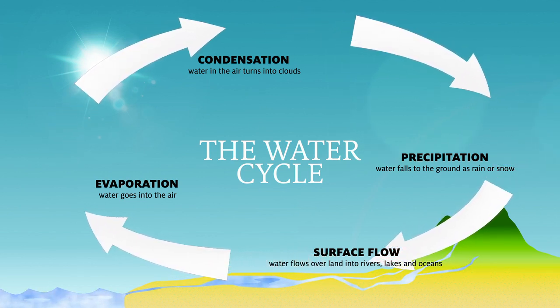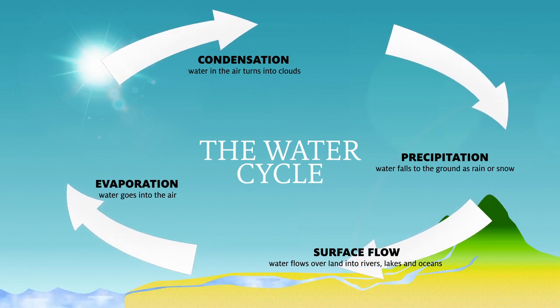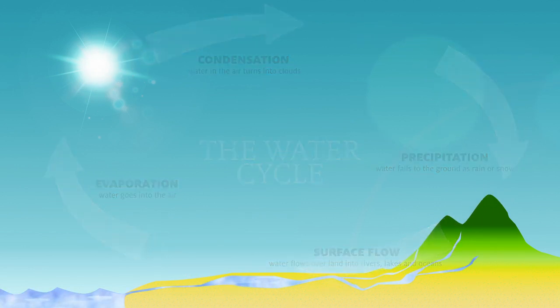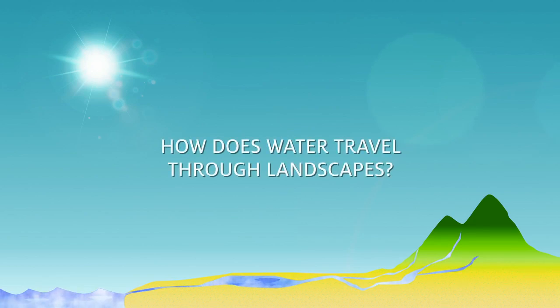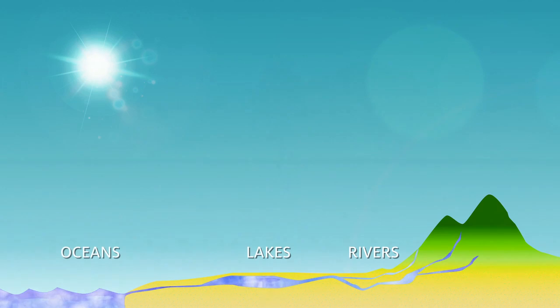If we look closer at what happens when water falls to the ground, we realize that there are many paths water can take on land. We already talked about how some of the water flows over the surface into rivers, lakes, or oceans.